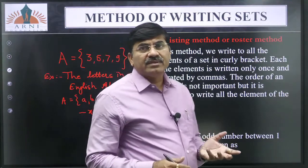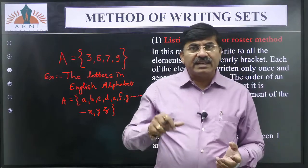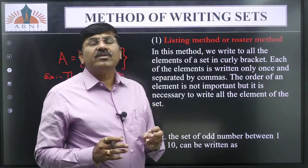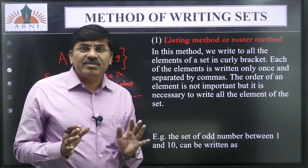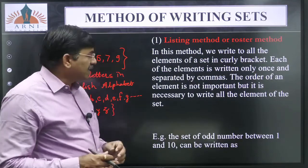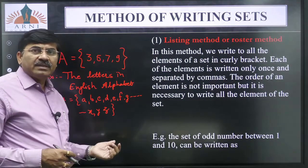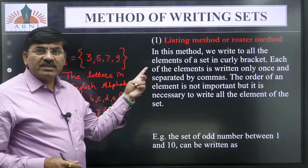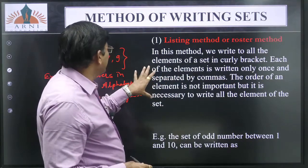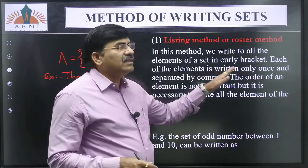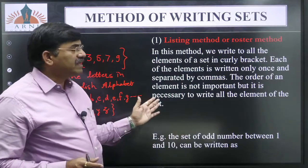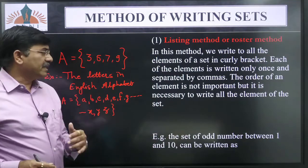That is called as the first method which is called as listing method. Saglai je objects ashtil te saglai object aap lala te set chaat lehi che that is called as listing method. Is that clear understood everyone? Write down this definition also, in this method we have to write all the elements of the set in curly bracket.